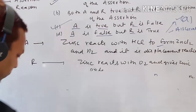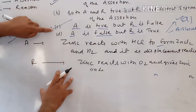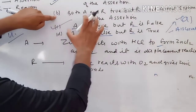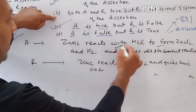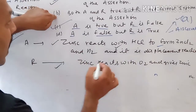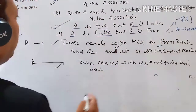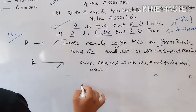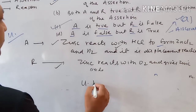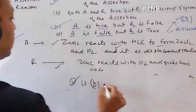Since both Assertion and Reason are true but Reason is not the correct explanation of Assertion, we match this to option B. Therefore, question number four answer is option B.